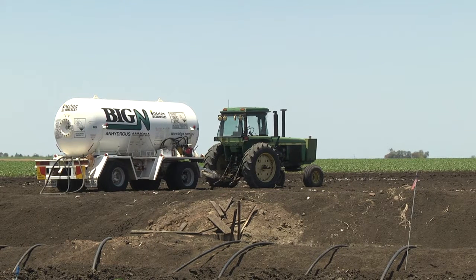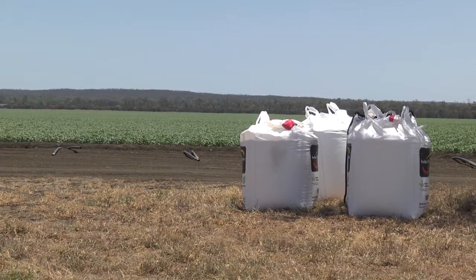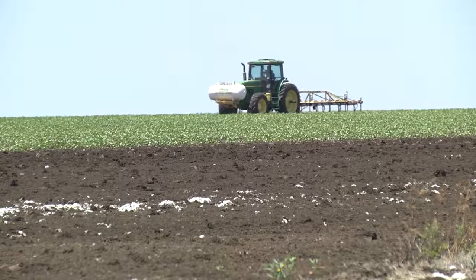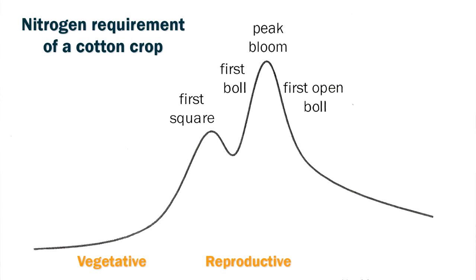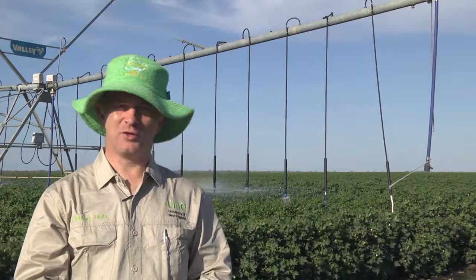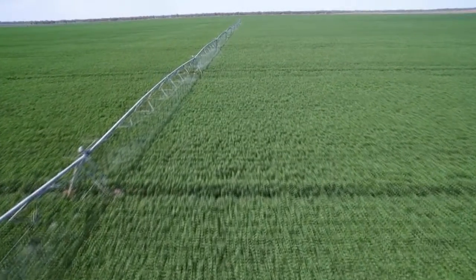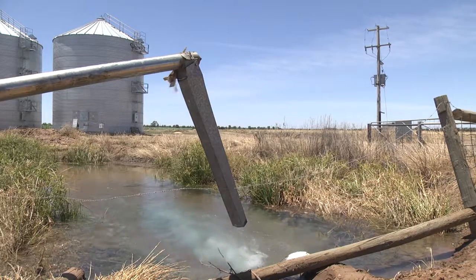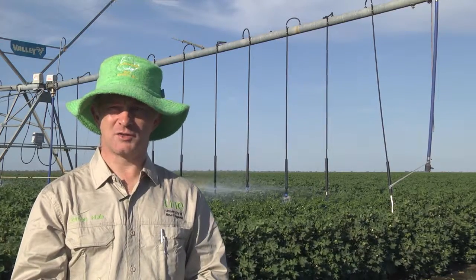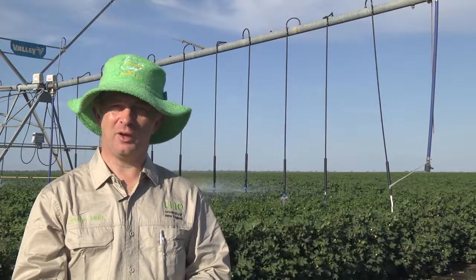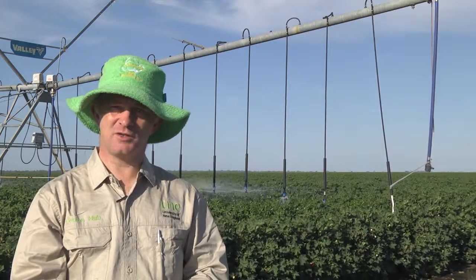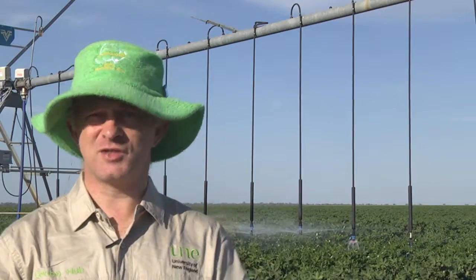In the past, going all upfront removes risk when you can't get back in the field or apply later. More recently, split application is probably the better way to go — it partitions the ability to feed the plant. The plant doesn't need nitrogen until it's going vegetatively and really going gangbusters; that's when it needs it. You might look at side dressing, catching storms early, using irrigations to move nitrogen into the profile, or water-run products. It largely comes down to your area, what's available, your experience, and your approach to risk.